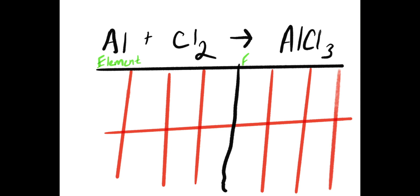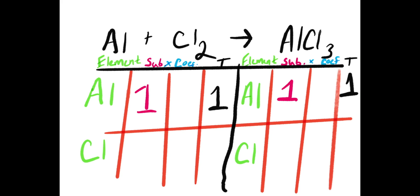In this first column of both reactant and product sides, I have listed all the elements within the equation. In this case, I only have aluminum and chlorine on both sides. My next step is to account for the subscripts. For aluminum on both the product and reactant side, there is no subscript. So we can assume that there is a 1 here.